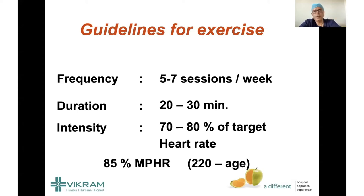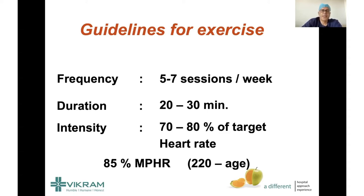Nowadays there are many apps and YouTube videos to guide you on exercise. If you want to know your target level, you should aim for 70 to 80 percent of your target heart rate while exercising — you can check this by pulse without a smartwatch. Your target heart rate is 80 to 85 percent of your maximum heart rate for your age. Subtract your age from 220 to get your maximum heart rate, then take 85% of that. For most people who are not very old or frail, around 120 to 130, or even 140 to 150, beats per minute is a very reasonable target.